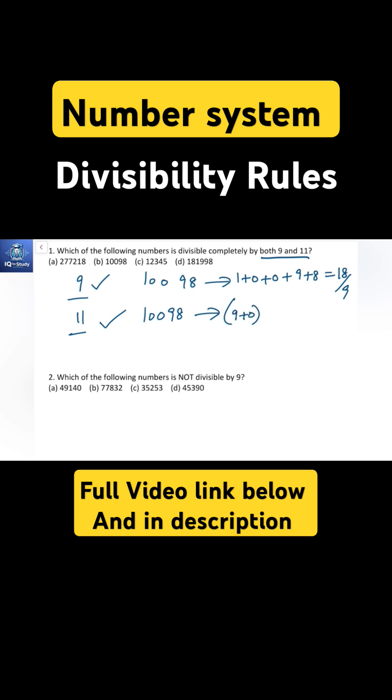For 10098: (9+0) - (8+0+1) = 9-9 = 0. So 11 also follows, and option B is correct.